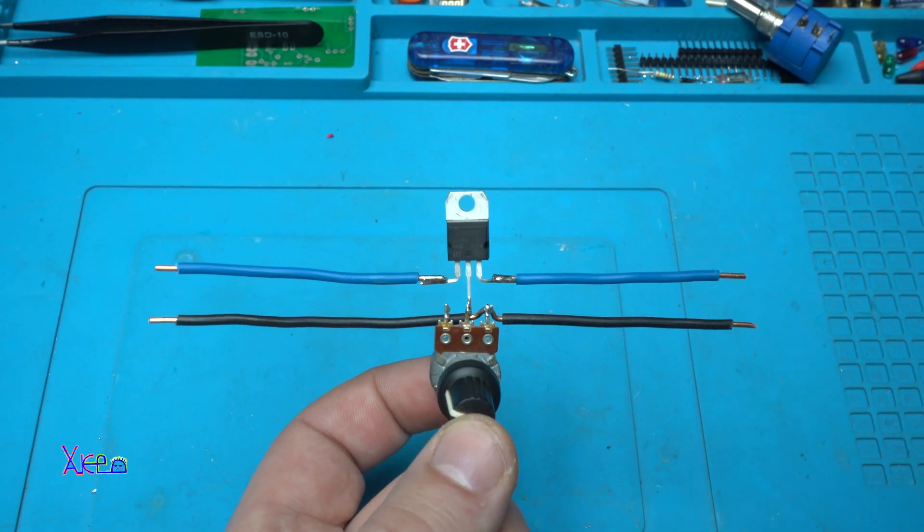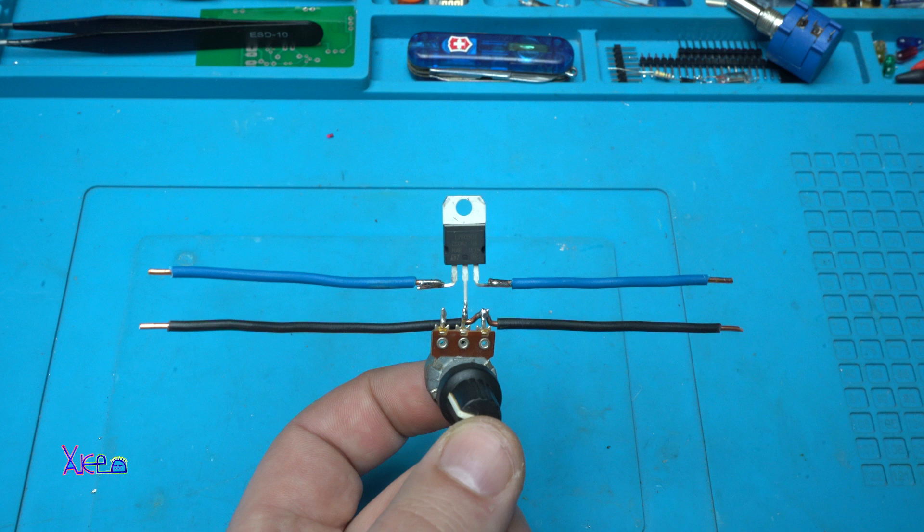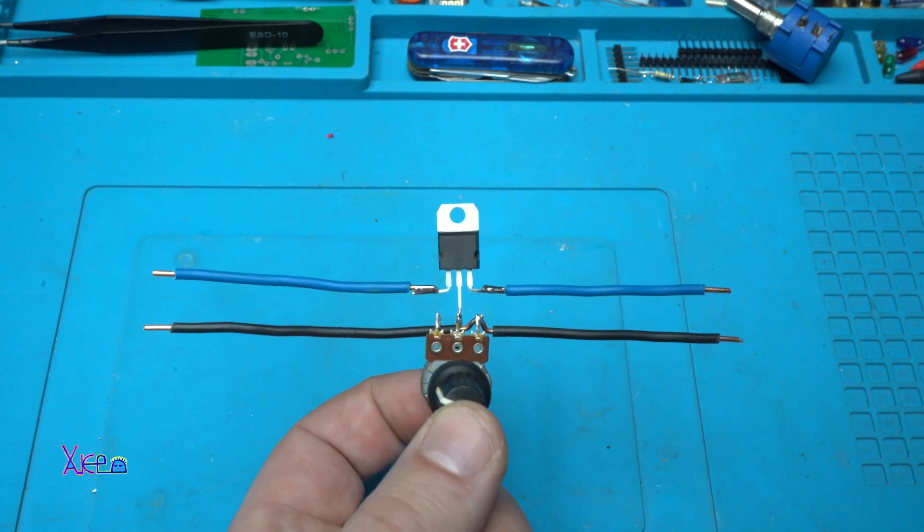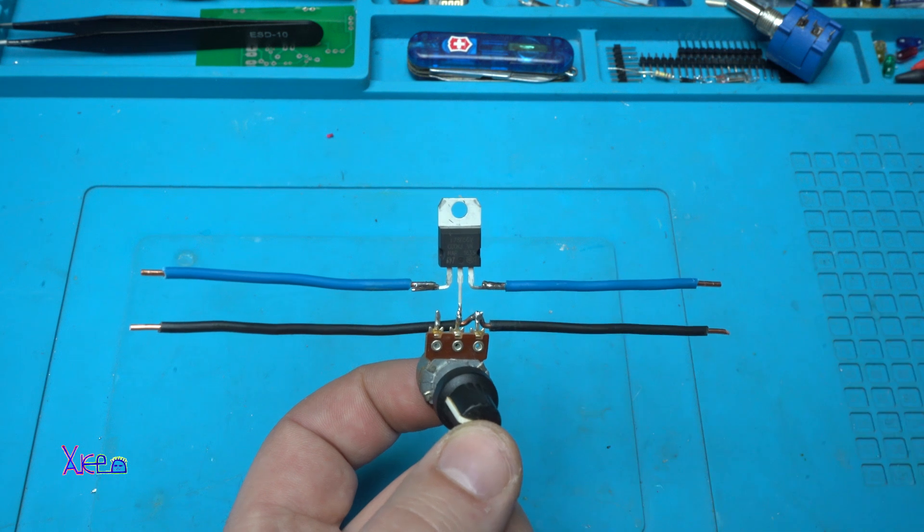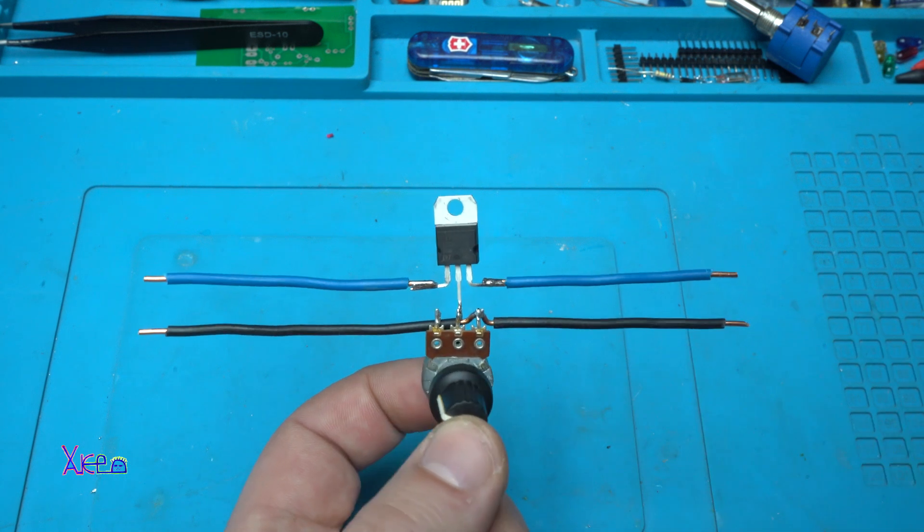And the circuit is finished. It's so simple, how to make an adjustable voltage regulator using the 7805 and one potentiometer.